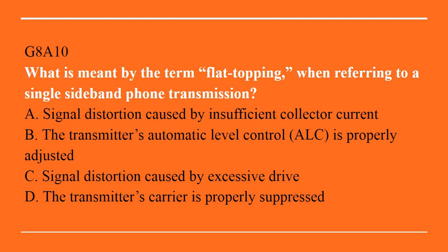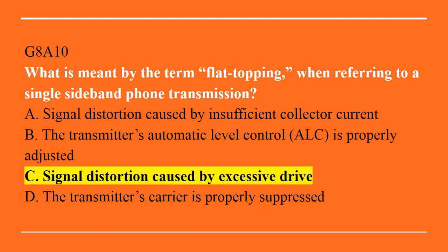G8A10: What is meant by the term flat topping when referring to a single sideband phone transmission? A. Signal distortion caused by insufficient collector current. B. The transmitter's automatic level control is properly adjusted. C. Signal distortion caused by excessive drive. D. The transmitter's carrier is properly suppressed. Answer is C. Signal distortion caused by excessive drive.